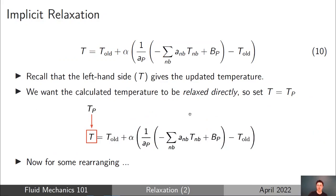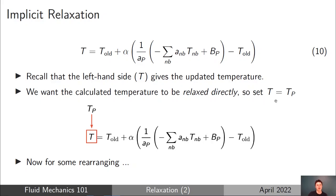Equation 9 looks a bit messy. The trick is to remember what the left-hand side T actually means — it's the actual value we use after applying relaxation, the value reported back to the user on the screen, shown in the plot monitor or contour. With implicit relaxation, we're moving the dotted line down so that the calculated value TP gives us the value of T directly. So with implicit relaxation, we set T equal to TP.